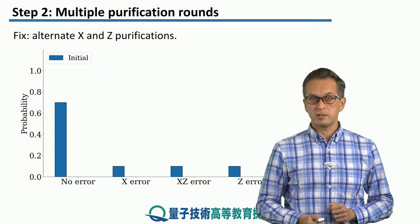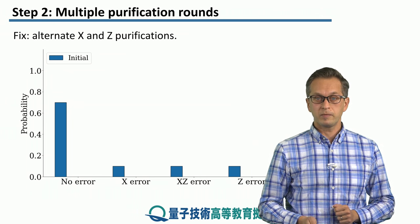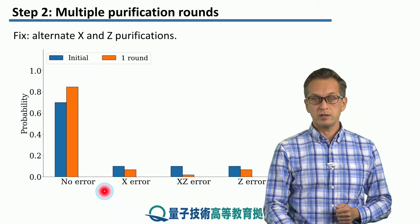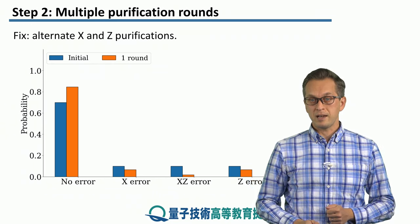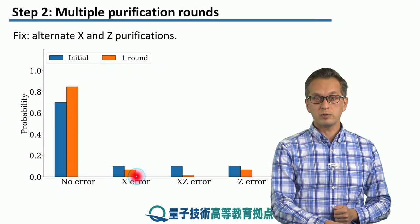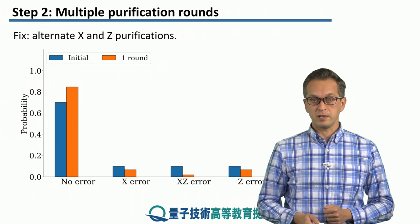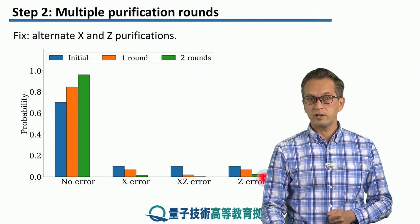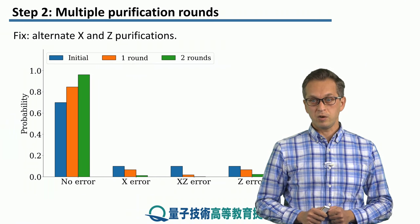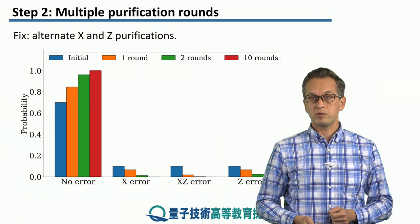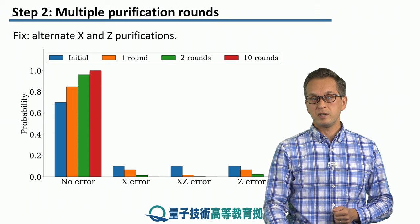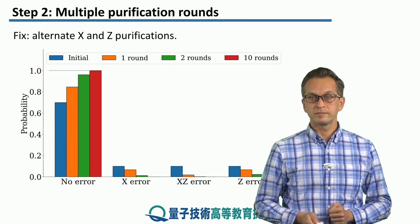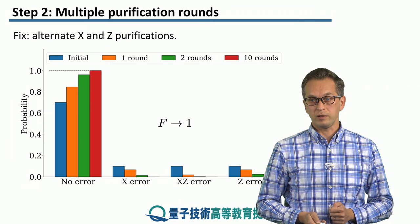So this time, one round is going to be x purification followed by z purification. Again starting with the same Werner state with initial fidelity 0.7, after one round of x and z purifications we see that the x error, xz error, and z error are all suppressed, leading to a nice boost in fidelity. Repeating this round suppresses all errors even further. After 10 rounds, the errors are virtually non-existent, we get a nice pure Bell pair, and the fidelity goes to 1 — exactly what we're looking for.